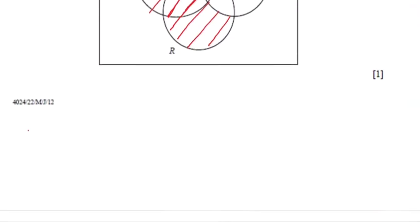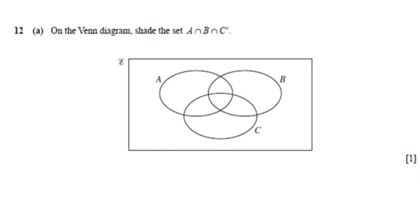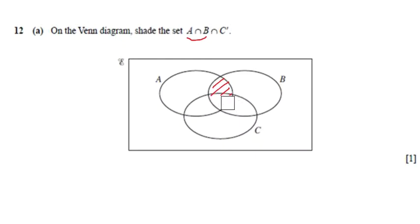Let's look at another question. We have this Venn diagram and we have to shade A ∩ B ∩ C'. We read this as: A and B and not C. So we have to shade everything common to A and B, but it cannot be in C. Step by step: A intersection B is this common part between A and B. But there's another condition — that we cannot be inside C. C complement means not C. So we remove the part of A∩B that falls inside C, and this is going to be the final shaded region.